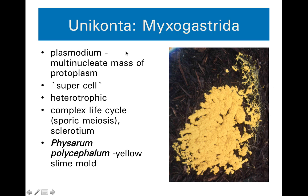The first phylum to consider is called Myxogastrida, sometimes called Myxomycota, which implies that it is fungus-like, and that is true. Myxogastrids are typically found, when they're not reproductive, as a plasmodium — a lowercase, unitalicized plasmodium — which describes a multinucleate mass of protoplasm. Basically, it's like one big cell with hundreds of nuclei that can interact with each other, so that's why we might call it a supercell.